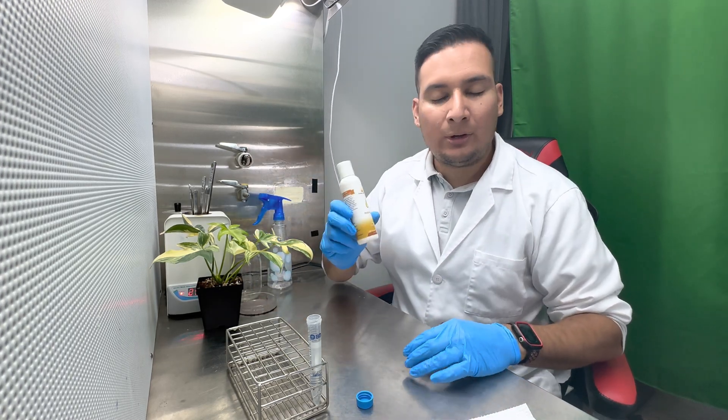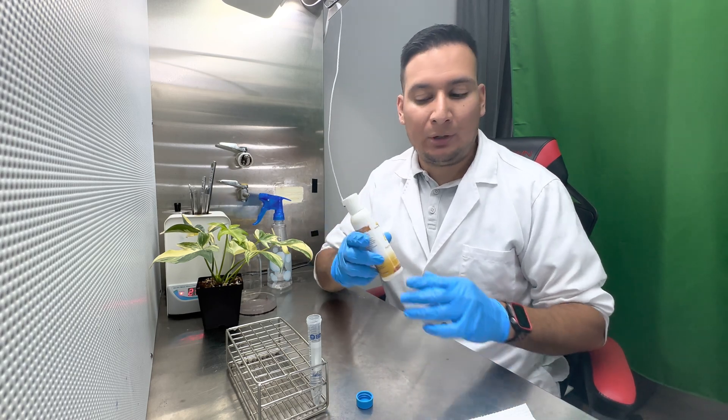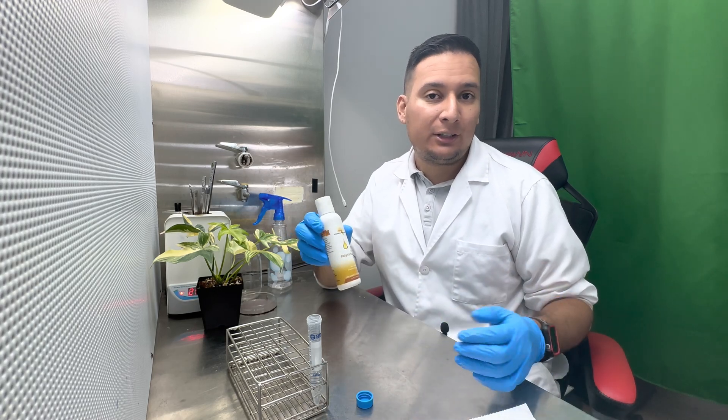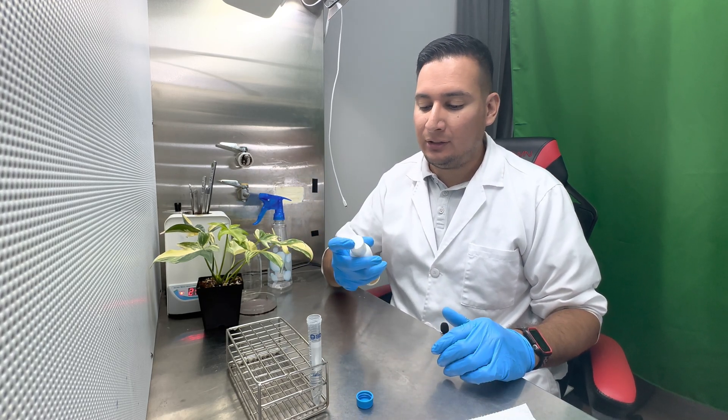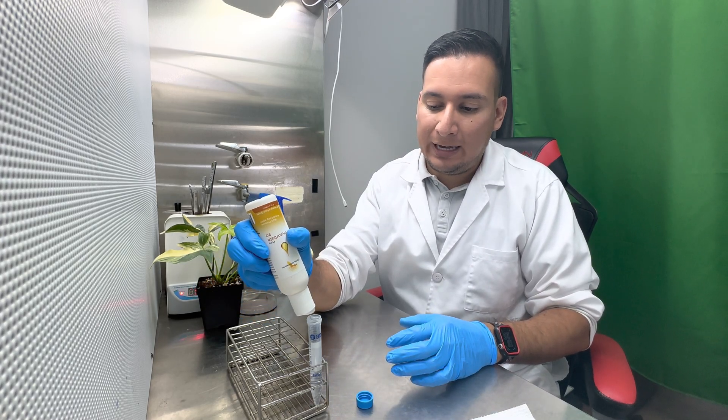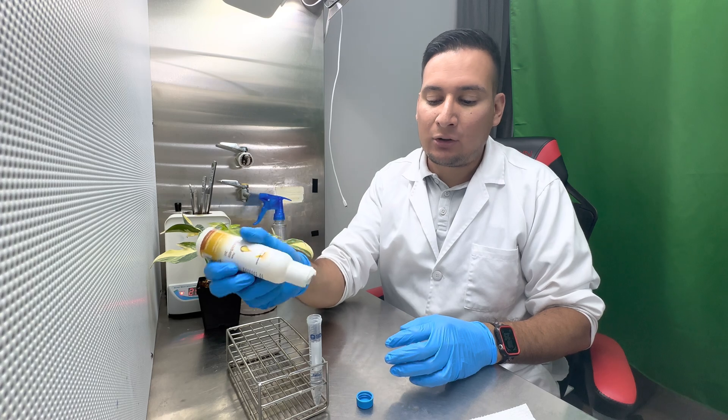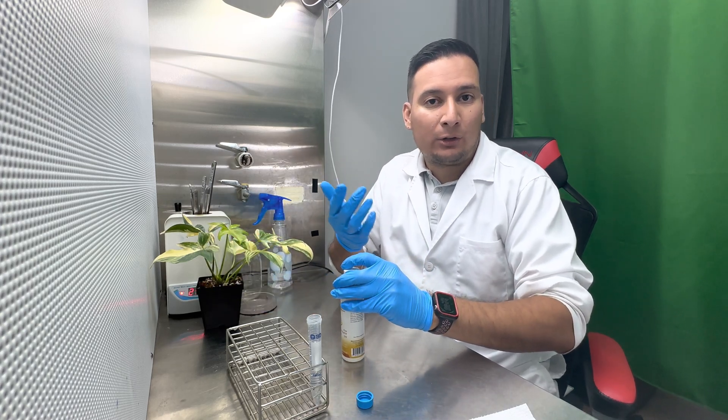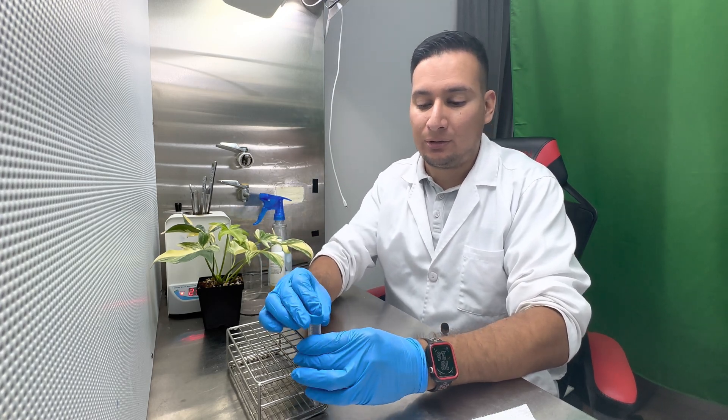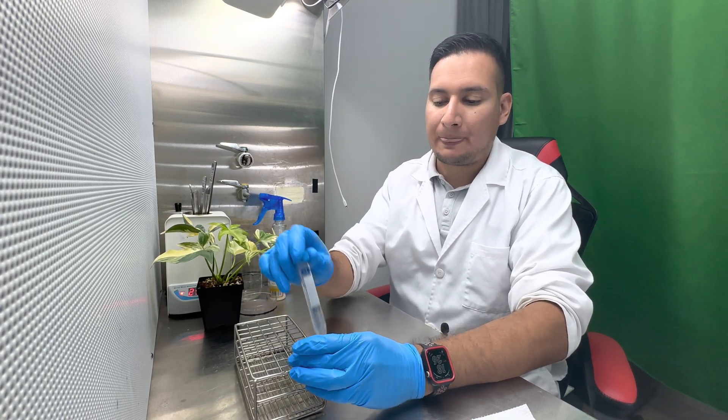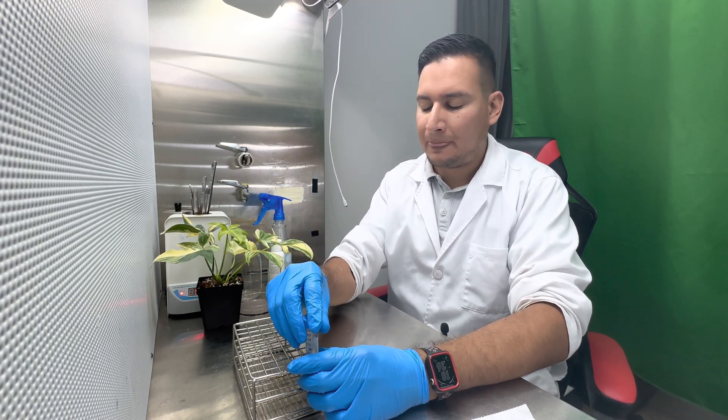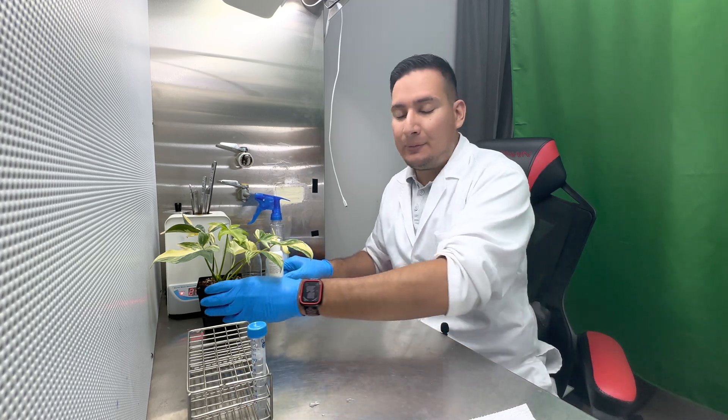Next I want to add a surfactant, this is polysorbate 20. You can also use Tween 20 or dish detergent if you don't have anything like this. The surfactant just makes the bleach have better contact with the surface of the plant so it's a better sterilizing solution. Now I'm ready to take the cutting from my plant.